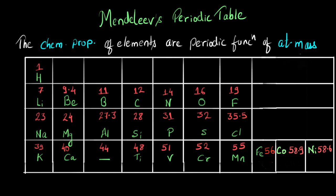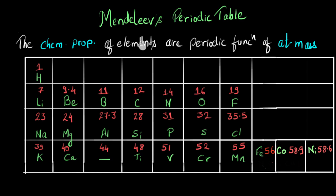At that point in time, Mendeleev had no clue about how the chemical property of an atom is related to its atomic mass — how is atomic mass deciding the chemical property? He had no idea, and because of this he could not answer some of the limitations or challenges that appeared.